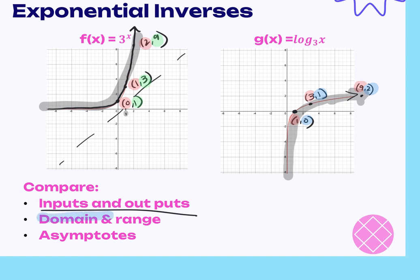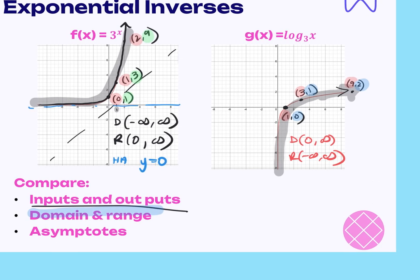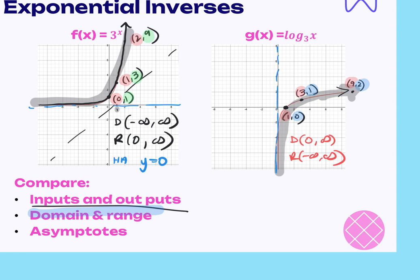Now let's talk about domain and range. For the exponential function on the left, the domain is negative infinity to positive infinity, and the range is (0, +∞) — it never touches zero, so parentheses. For the log function on the right, the domain is (0, +∞) and the range is negative infinity to positive infinity. Does it make sense that those are switched? Yes — because they are inverses of each other. The exponential has a horizontal asymptote at y = 0; the log has a vertical asymptote at x = 0.